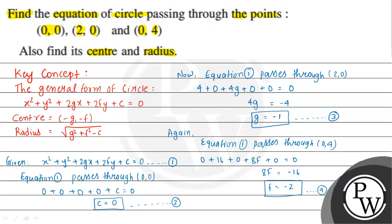Now we have g, f, and c values. Putting g = -1, f = -2, and c = 0 in equation 1, we get x² + y² - 2x - 4y = 0. This is the required equation.